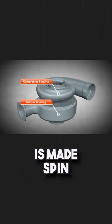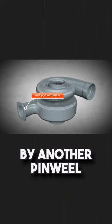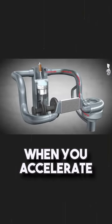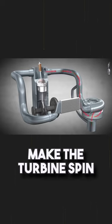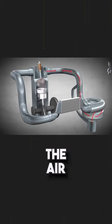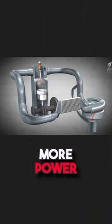This compressor is made to spin by another pinwheel called the turbine, which is spun by the exhaust gases. So when you accelerate, the exhaust gases make the turbine spin, which makes the compressor spin, which compresses the air, and therefore makes the engine more powerful.